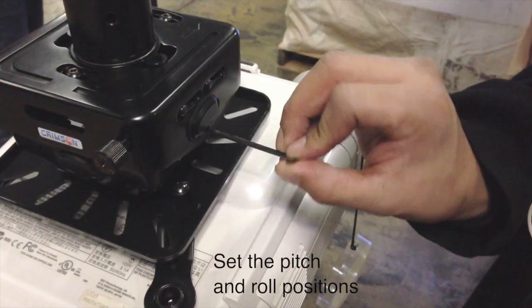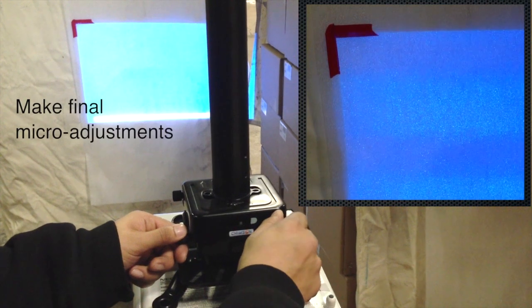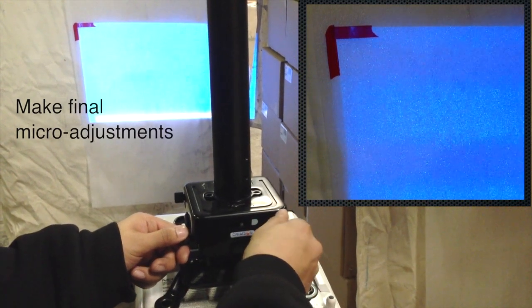After the projector is aligned, set the pitch and roll by tightening the respective set screws. If necessary, make the final micro-adjustments by turning the adjustment knobs.